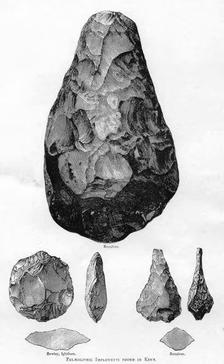Evidence for clothing, such as possible sewing needles from around 40,000 years ago and dyed flax fibers dated 36,000 BP found in a prehistoric cave in the Republic of Georgia, suggests people were wearing clothes at this time. Human beings may have begun wearing clothing as far back as 190,000 years ago. Art of the Upper Paleolithic included cave painting, sculpture such as the Venus figurines, carvings and engravings of bone and ivory, and musical instruments such as flutes. The most common subject matter was large animals hunted by the people of the time.